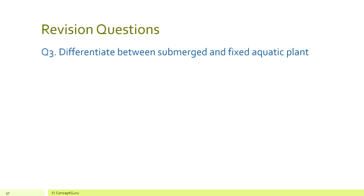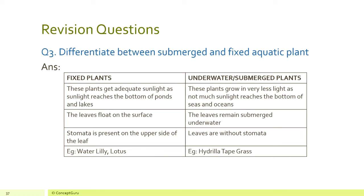Differentiate between submerged and fixed aquatic plants. In a table format: fixed plants get adequate sunlight as sunlight reaches the bottom of ponds and lakes, whereas submerged plants grow in very little light as not much sunlight reaches the bottom of seas and oceans. For fixed plants, leaves float on the surface; for submerged plants, leaves remain underwater. Fixed plants have stomata on the upper side of the leaf; submerged plants have no stomata. Examples of fixed plants are water lily and lotus; examples of submerged plants are hydrilla and tape grass.